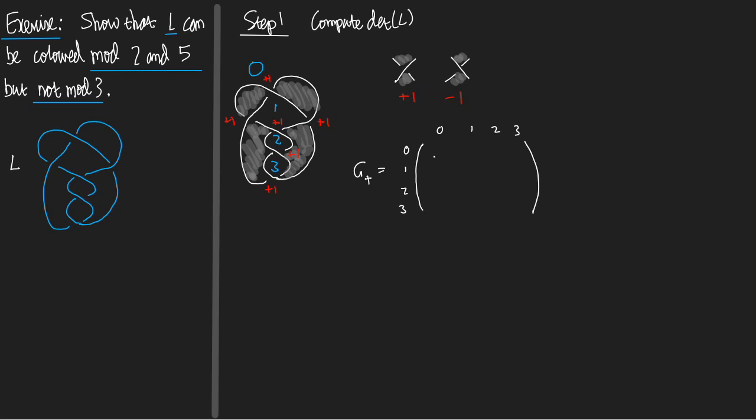And what goes in the 0, 0th entry, it's the sum of the signs around region 0 negated. So it's minus 4. 0 and 1, that's in position 0, 1. That's the sum of the signs between regions 0 and 1. Well, there's 1, 2, 3 plus 1s. What goes in entry 0, 2? It's the sum of the signs where region 0 and region 2 meet. Well, there aren't any. And what's the entry in 0, 3? It's the sum of the signs where region 0 and region 3 meet. Well, that's exactly 1. It's here. Plus 1.